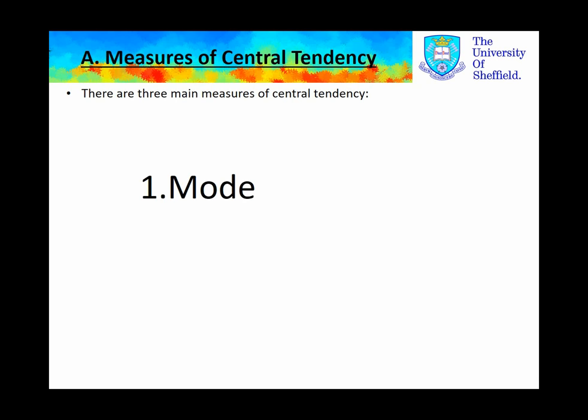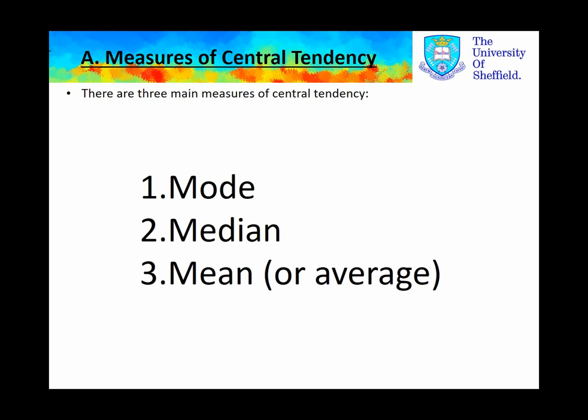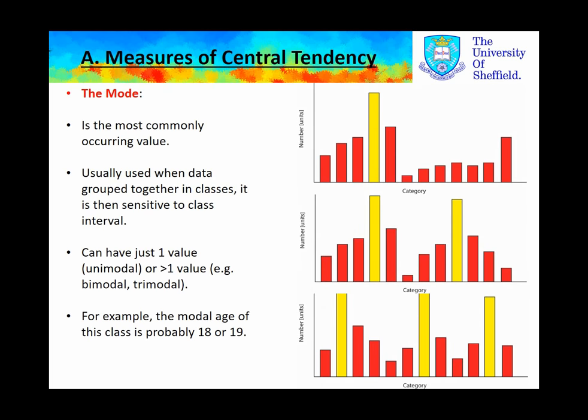There are three main measures of central tendency: the Mode, the Median, and the Mean or Average. The Mode is quite simply the most commonly occurring value, and is best used when we group data together in classes. We can have one modal value, two modal values, three modal values, or even more than that. The graphs on the right demonstrate three different types of modes: unimodal, bimodal, and trimodal or multimodal.